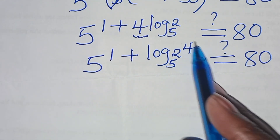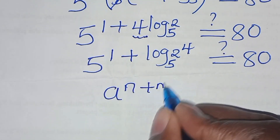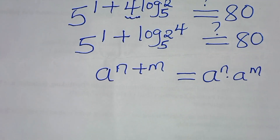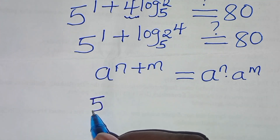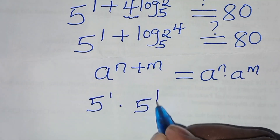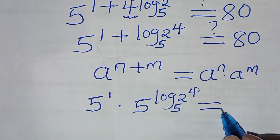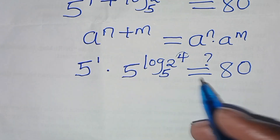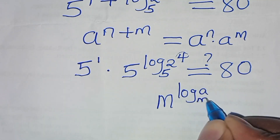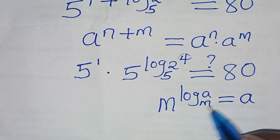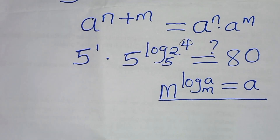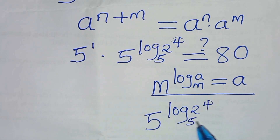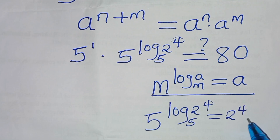Now, 5 to the power 1 plus log of 2 to the power 4 to base 5 is in the form a to the power n plus m, which we can express as a to the power n times a to the power m. Applying this exponent property, this is the same as 5 to the power 1 times 5 to the power log base 5 of 2 to the power 4. The expression 5 to the power log base 5 of 2⁴ is in the form m to the power log base m of a, which equals a. So 5 to the power log base 5 of 2 to the power 4 equals 2 to the power 4, which equals 16.